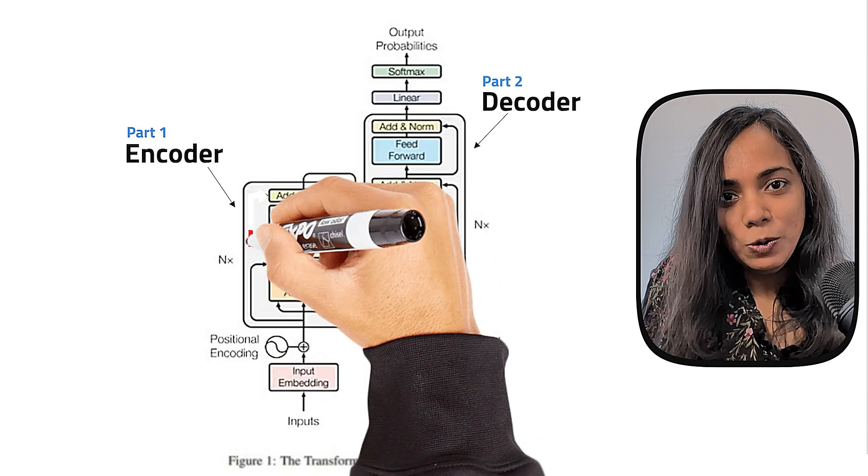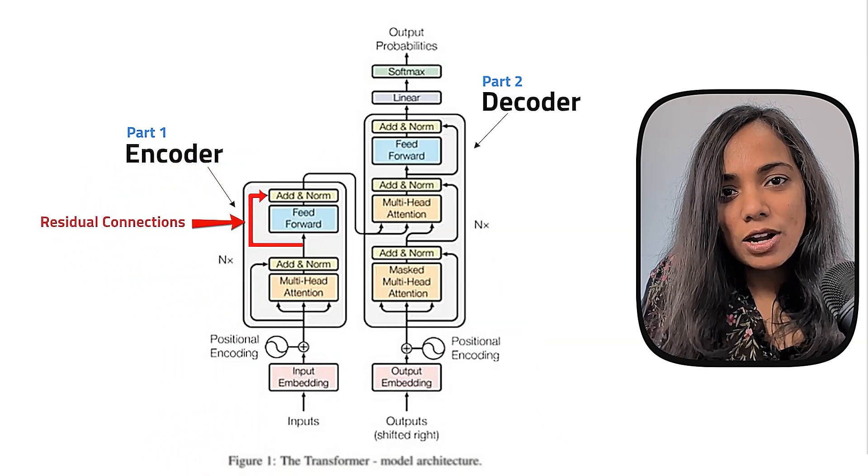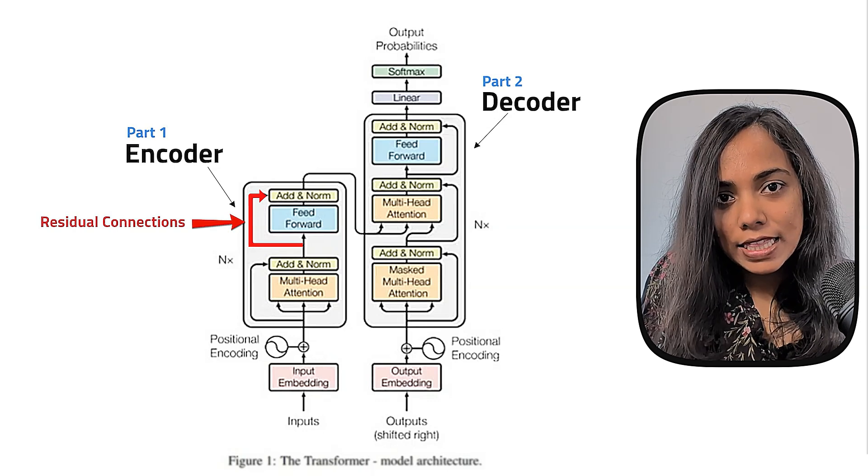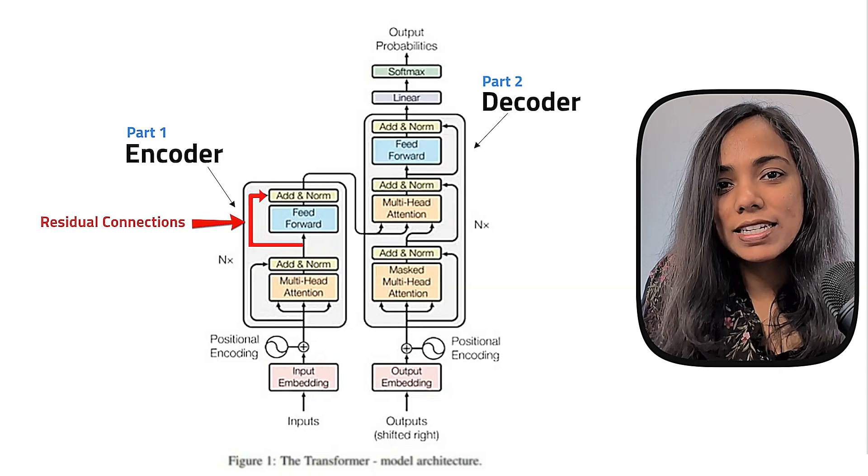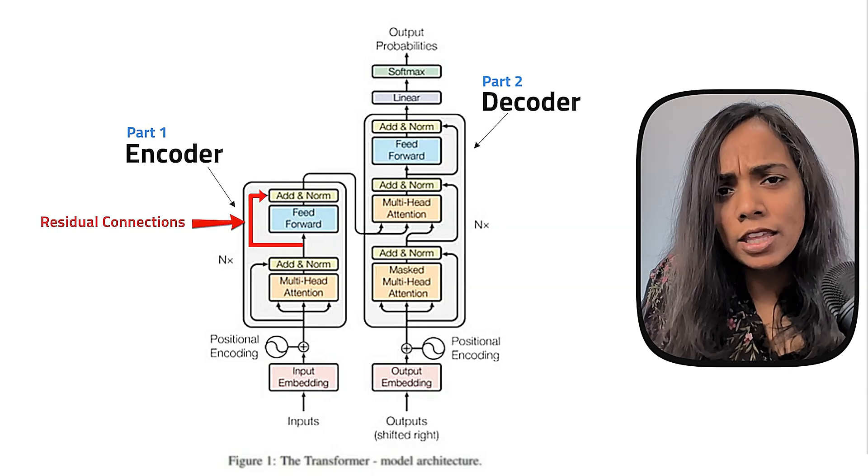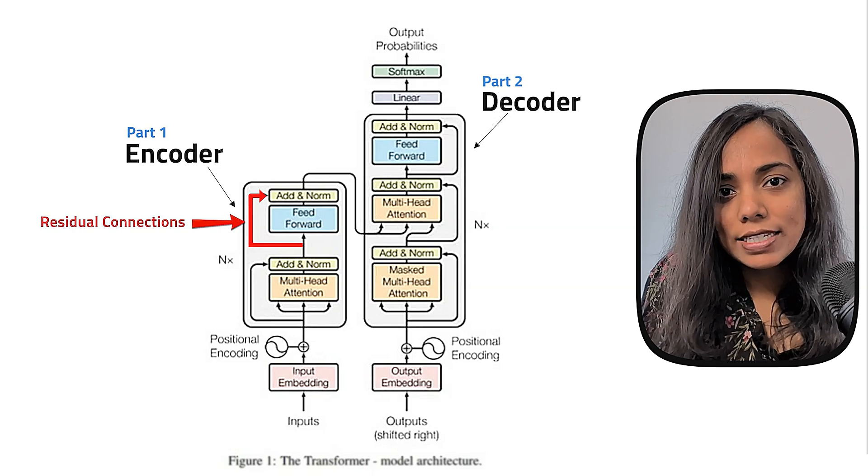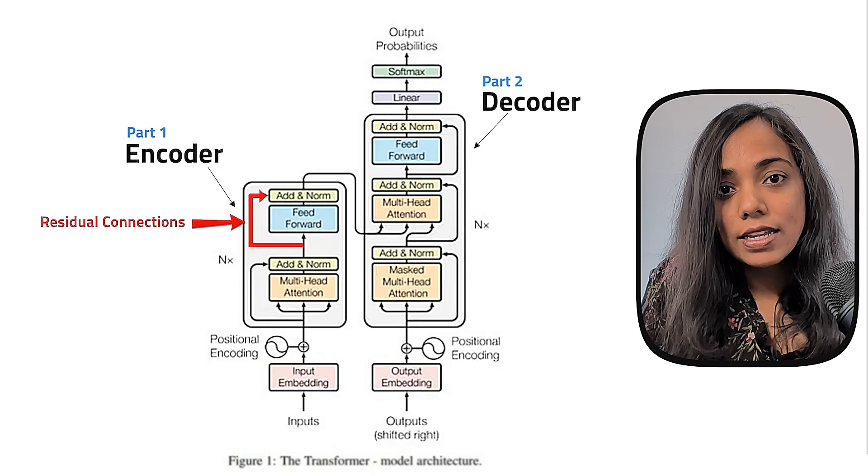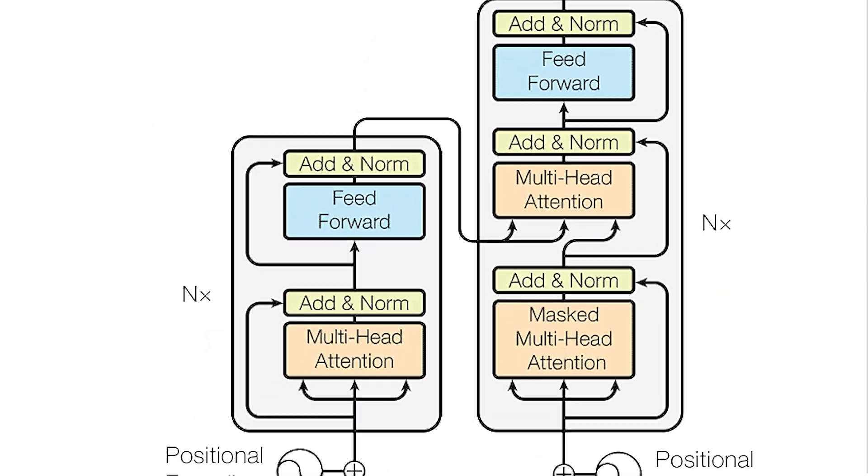There are these additional loops that you see within the sub-layers over here. These are called residual connections. They use something called residual connections to prevent learning problems that happen when the networks get too deep. Think of it as adding shortcuts so that the learning stays effective even with many layers.